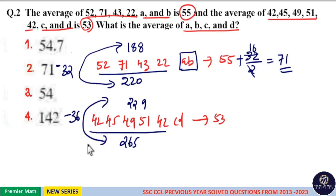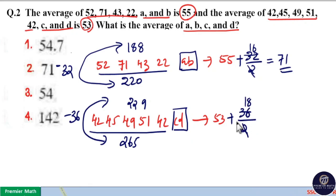229 is 36 less than 265. So in order to balance this difference, we should distribute this 36 to the remaining two numbers. That is 53 plus 36 by 2. 2 goes 18 times in 36, so 53 plus 18 is equal to 71.